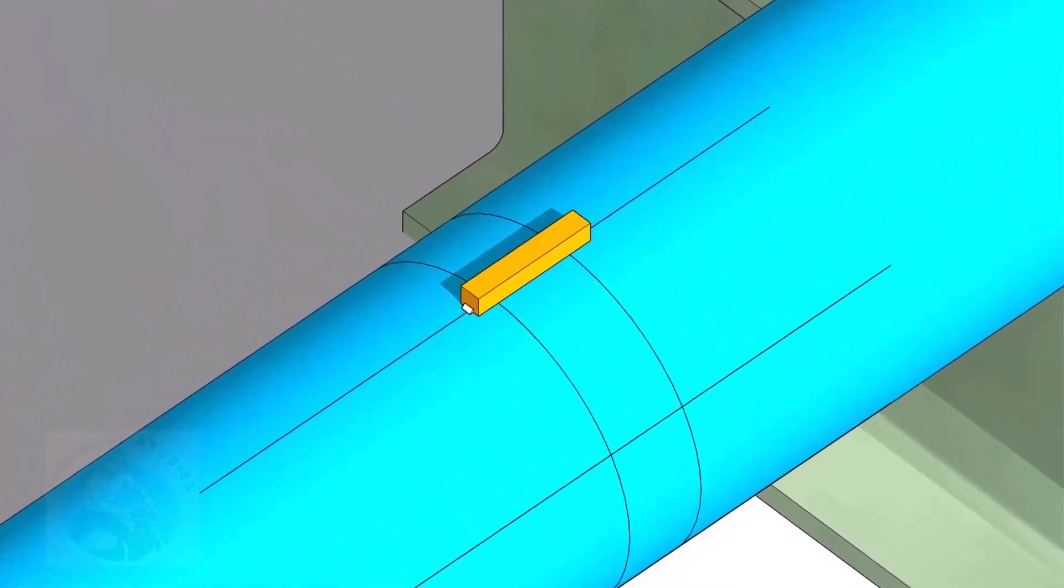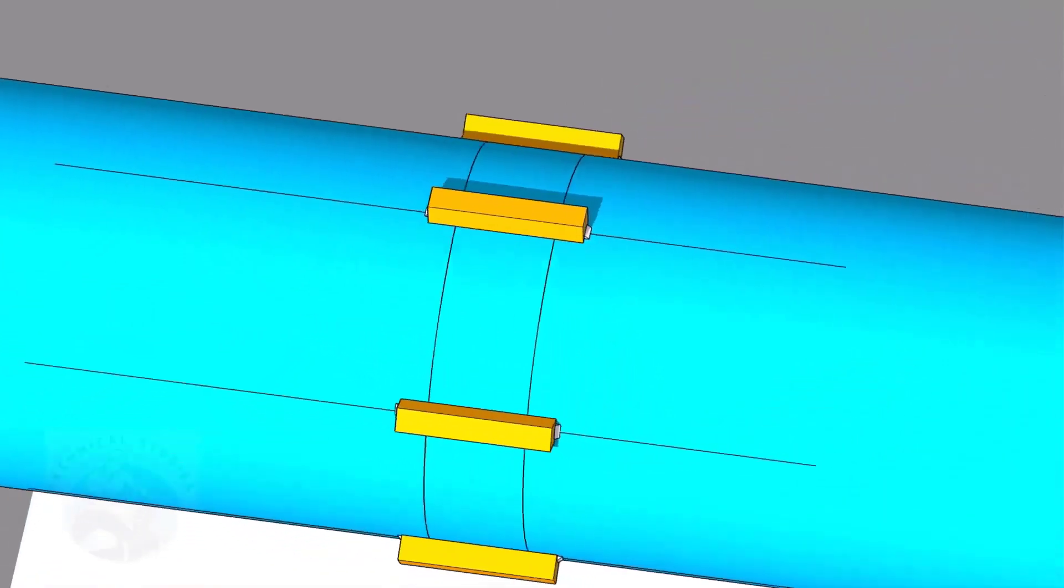Tack weld the square bars on the pipes as shown. Do not weld two big tacks.